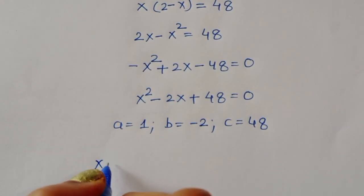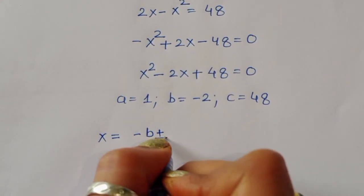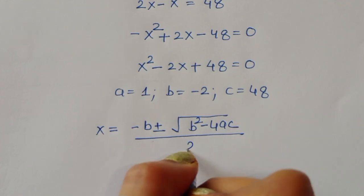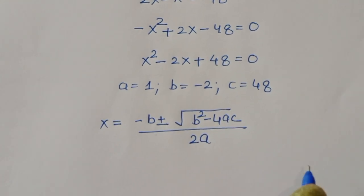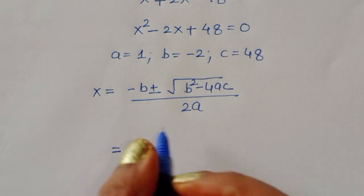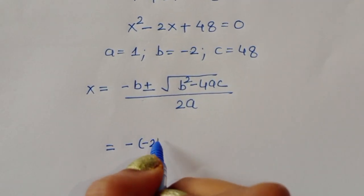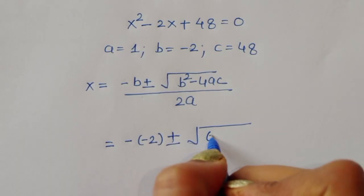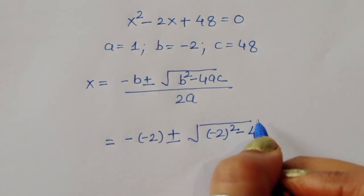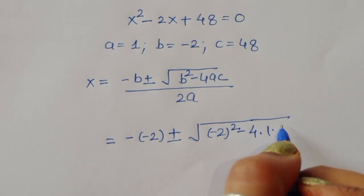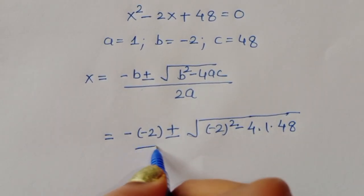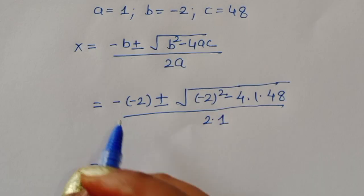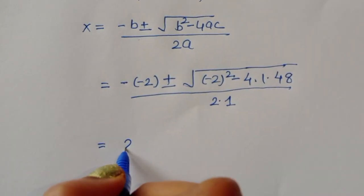We apply the quadratic formula: x equals minus b plus or minus square root of (b squared minus 4ac), all divided by 2a. Substituting: b is minus 2, so minus b is 2. We get x equal to 2 plus or minus square root of (minus 2 squared minus 4 times 1 times 48), divided by 2 times 1.